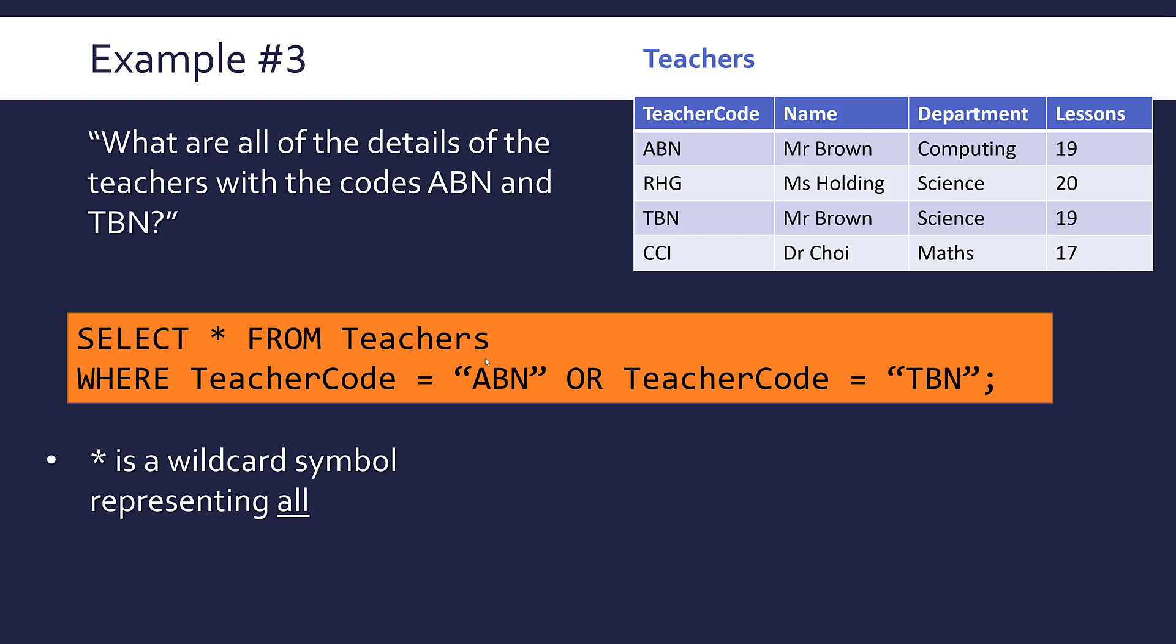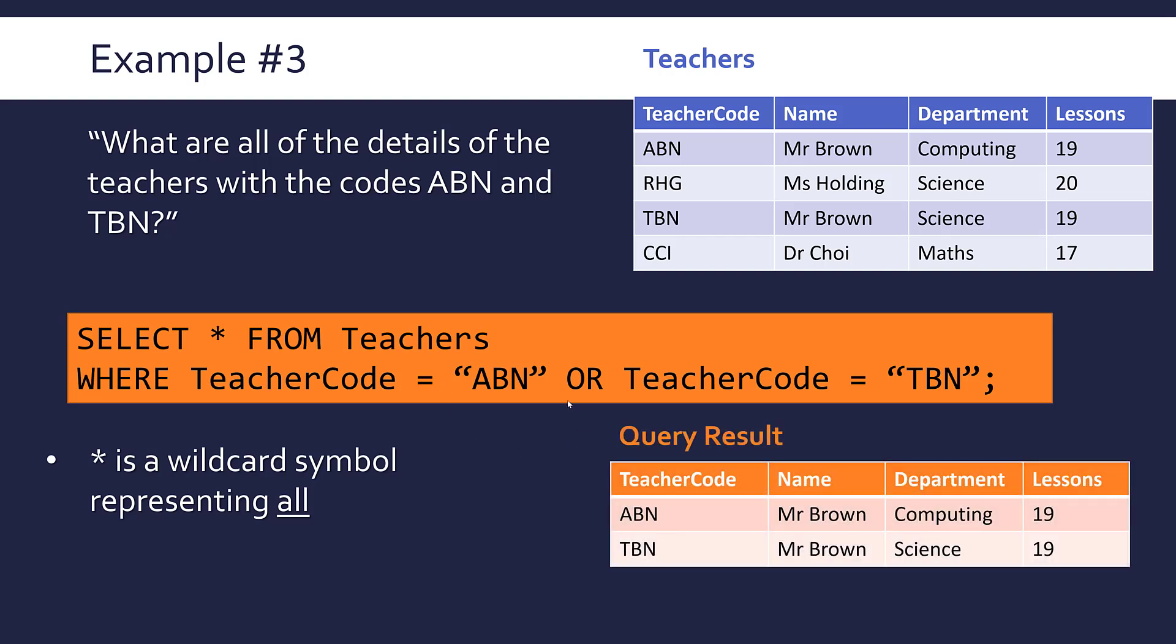I've still got to do from teachers to tell it the table. But now my where clause: I'm only looking for the codes ABN and TBN, so I've got a more complex condition here. I've got where teacher code equals ABN or teacher code equals TBN. Very similar to an if statement in programming. Despite my question saying and, I need the or operator, which you can do in SQL. Make sure it's capitalized. Boolean or is where it's one or the other. It doesn't make sense to have teacher code equals ABN and teacher code equals TBN because you can't have both. They're a primary key, teacher code, so you can't have two at the same time, so it's got to be or. This will give us just these two records, the ABN one and the TBN one with all four fields.